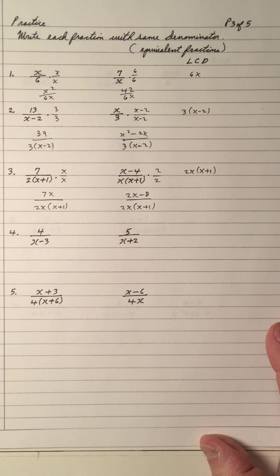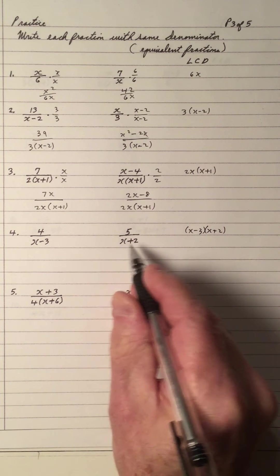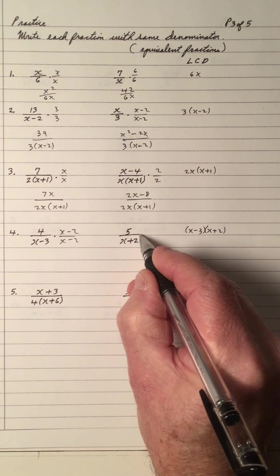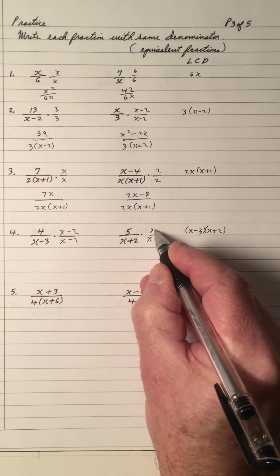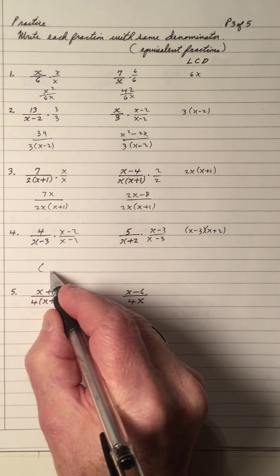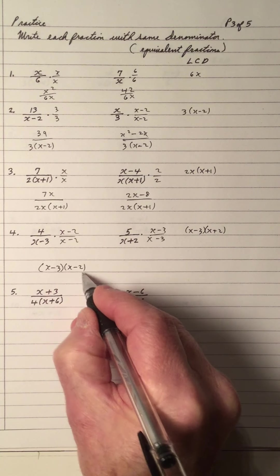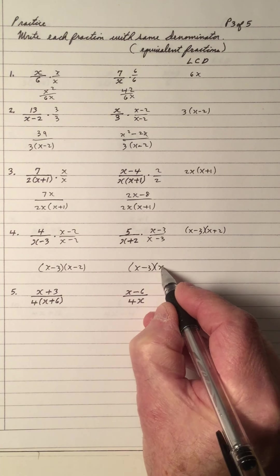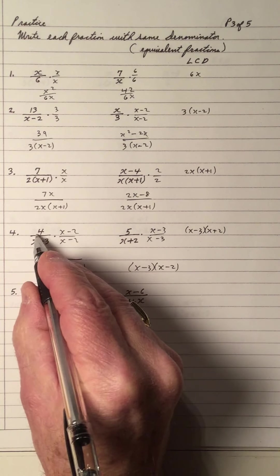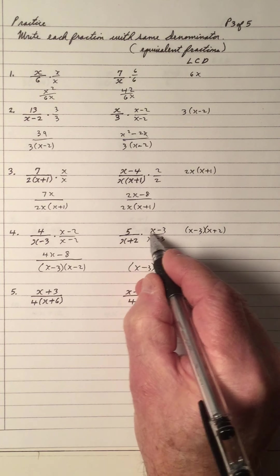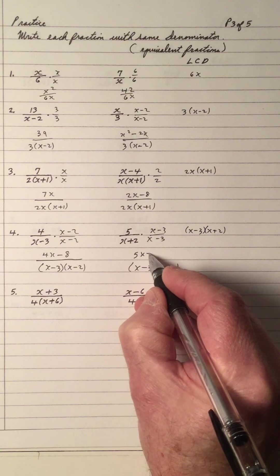Hopefully you begin to see the pattern I'm trying to establish. LCD is x minus 3, x plus 2 — they're different. So you multiply this one by x minus 2, top and bottom; multiply this one by x minus 3, top and bottom. So what denominator do you want? Write down x minus 3, x minus 2 — same for both. Multiply 4 times x and 4 times negative 2. Then 5 times x and 5 times negative 3.